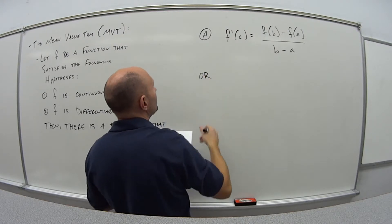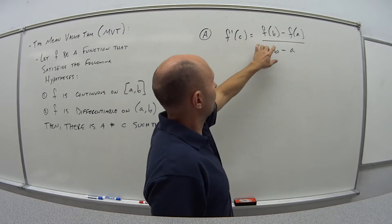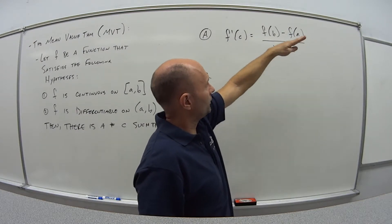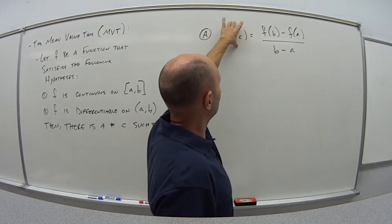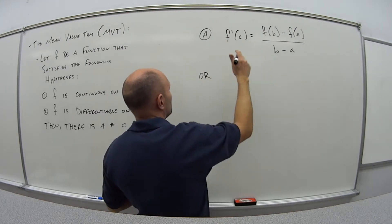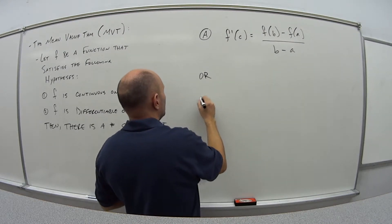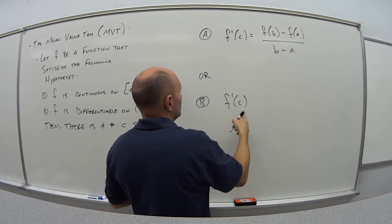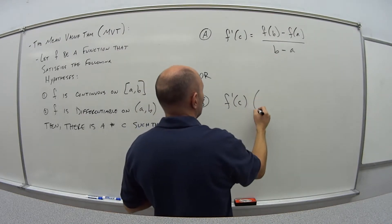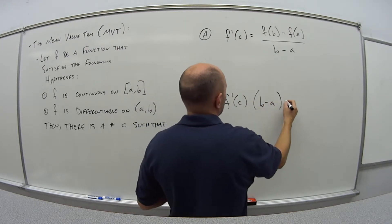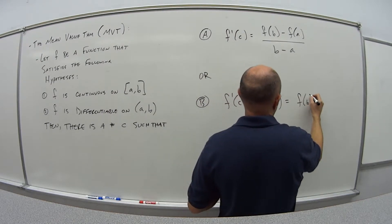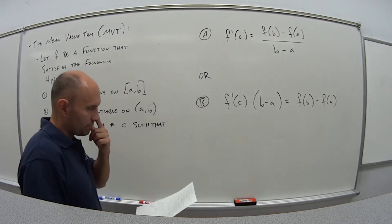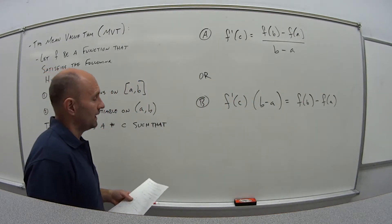f'(c) is equal to [f(b) - f(a)]/(b - a), or equivalently, if I multiply both sides by (b - a), another way you might see it written is f'(c) times (b - a) is equal to f(b) - f(a).